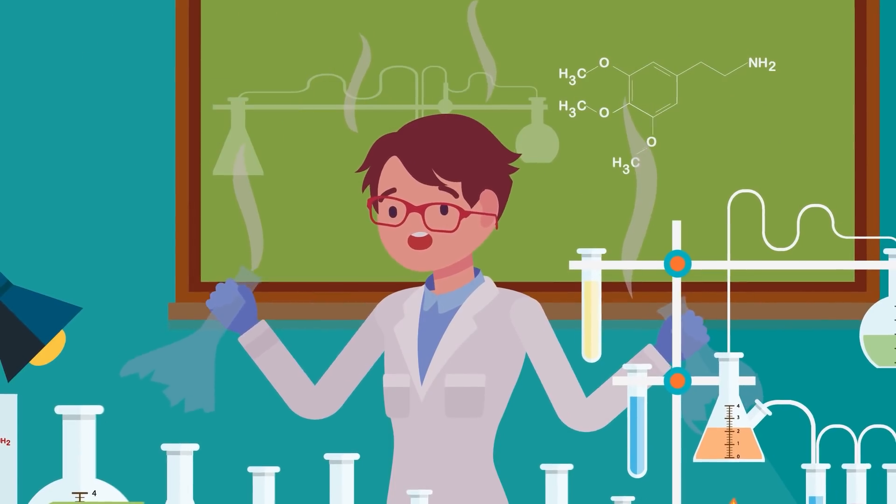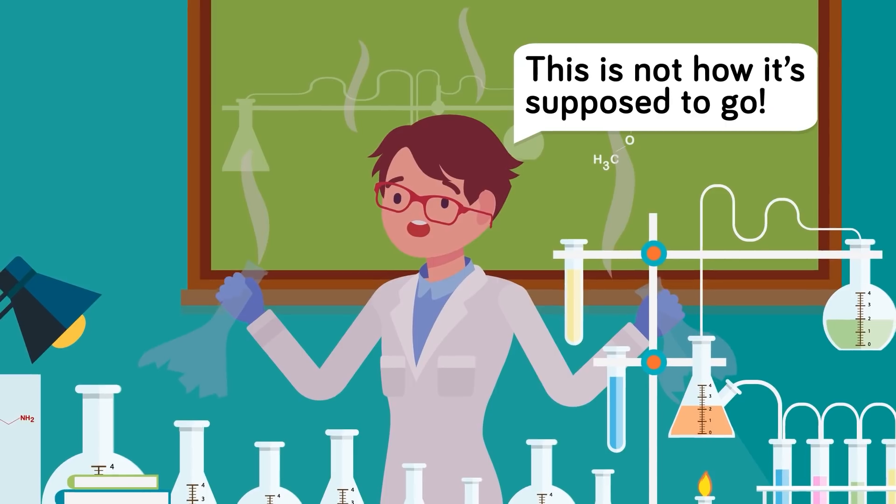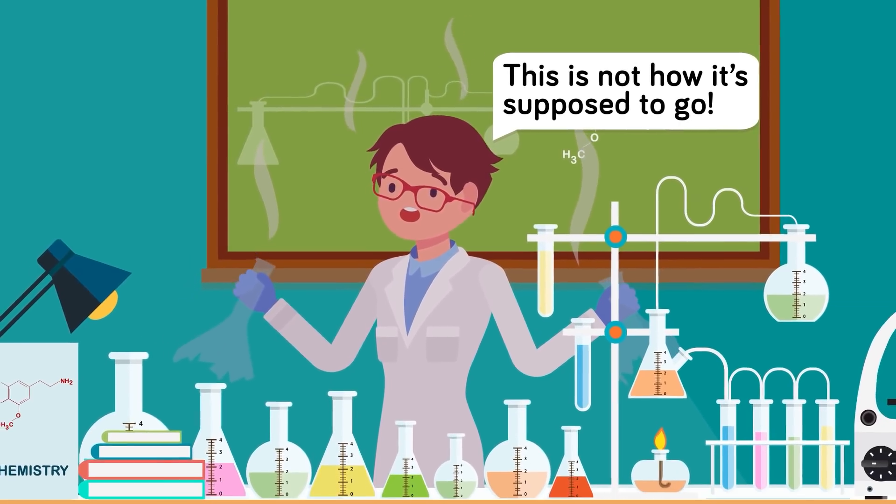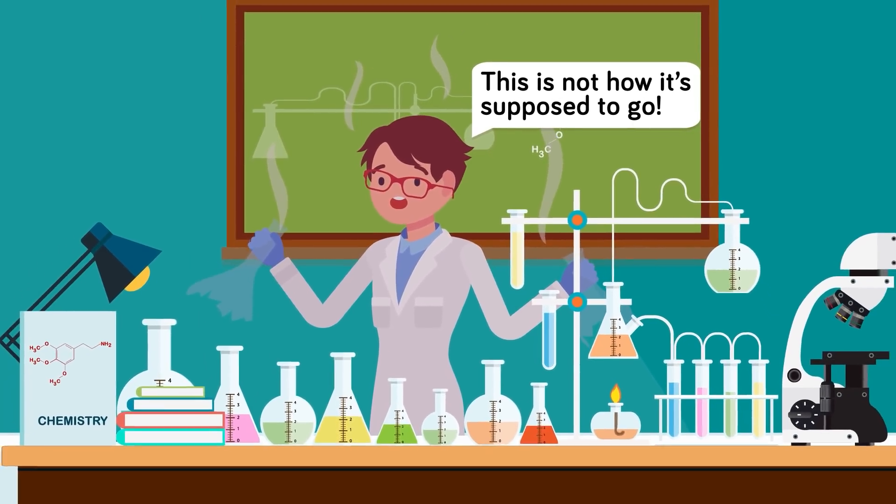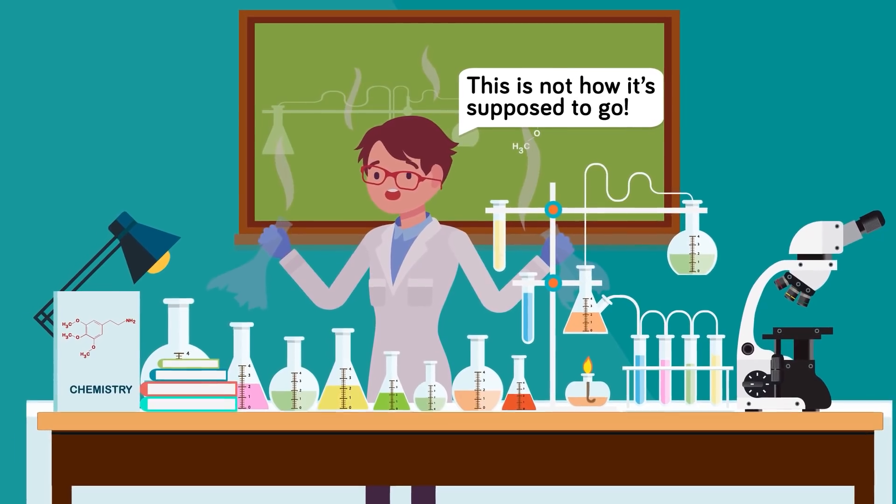The strength of a theory is tested on how many of its assumptions are proved correct through experimentation. And what the theory gets wrong tells us about the gaps in our knowledge, and where further research is needed.